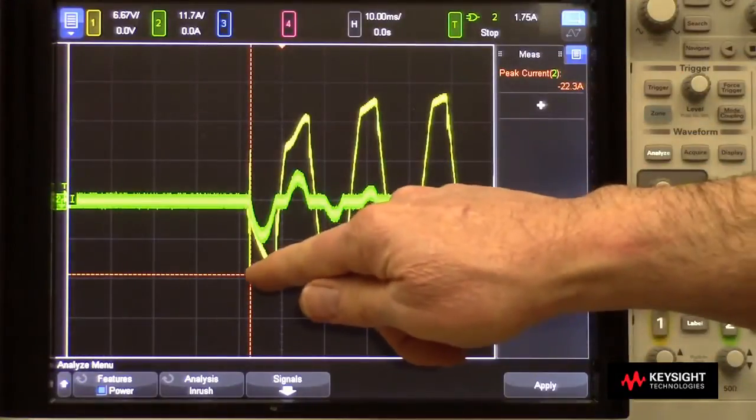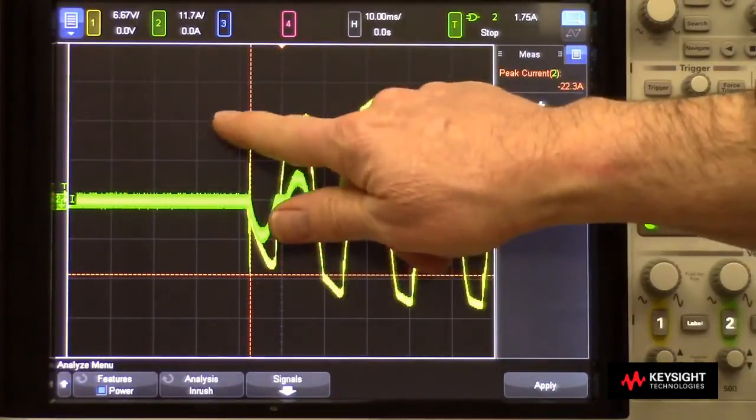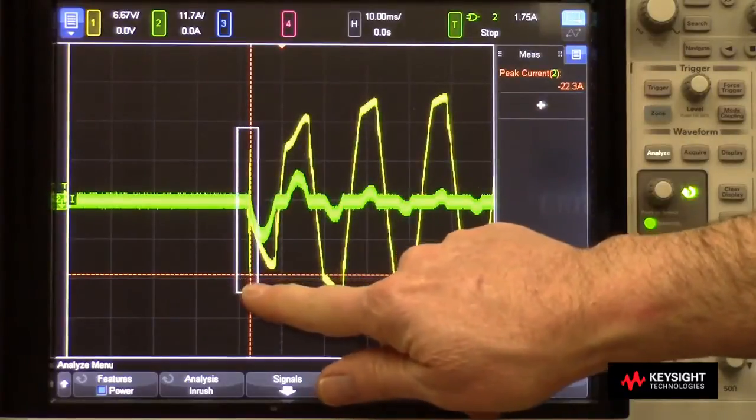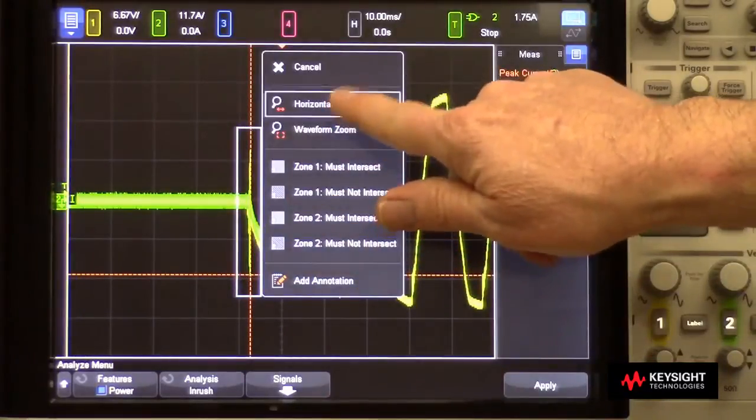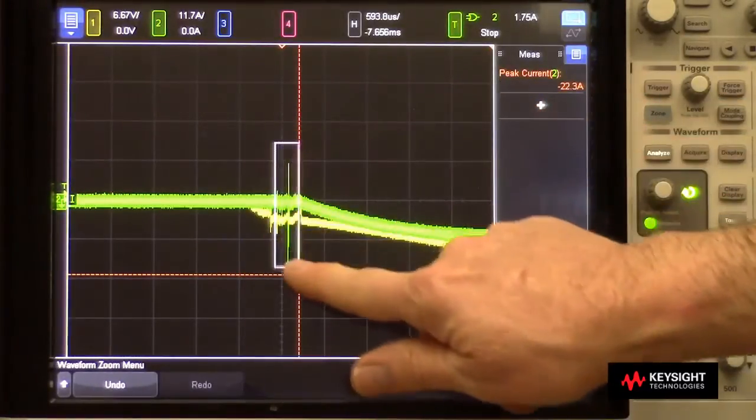Now, at this point, we can zoom in on this very narrow spike. I could use the scope's automatic zoom capability. Let's zoom again.